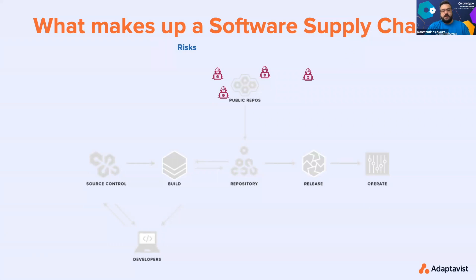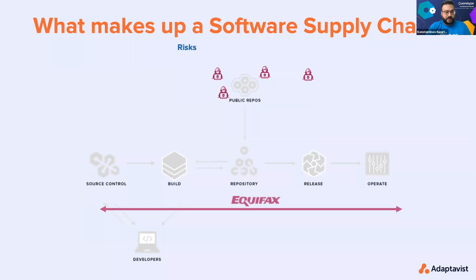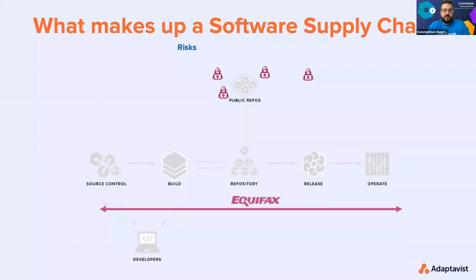Some notable software supply chain attacks include Equifax, which happened in 2017. It started with a vulnerability discovered in Apache Struts, an open source development framework for creating enterprise Java applications used by thousands of websites. Unfortunately this vulnerability was not mitigated, and attackers were able to access the Equifax environment for over 70 days undetected. About 143 million people's records were stolen, which brought down almost the whole C-suite of Equifax. The breach cost Equifax around $1.8 billion dollars to clean up, including compensation to their customers.